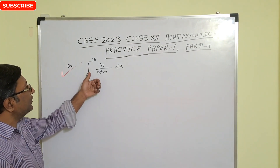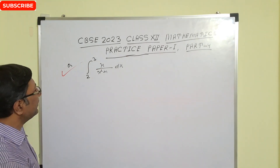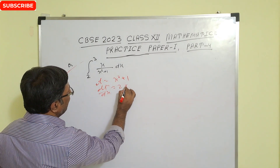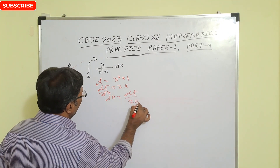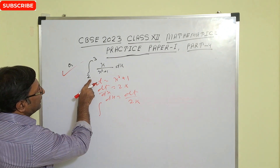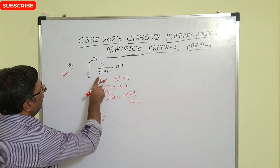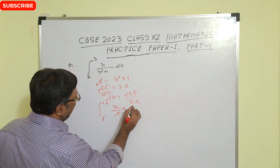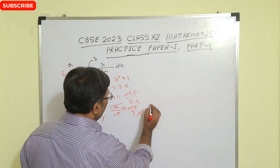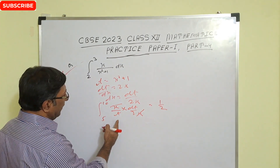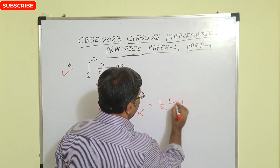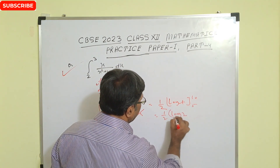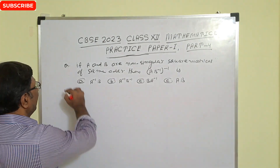Next question: evaluate the definite integral of x/(x² + 1) from 2 to 3. Let t = x² + 1, so dt = 2x dx, giving dx = dt/(2x). When x = 2, t = 5; when x = 3, t = 10. The integral becomes (1/2) ∫ dt/t = (1/2)[log t] from 5 to 10 = (1/2) log(10/5) = (1/2) log 2.